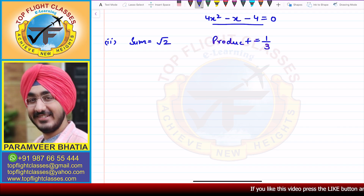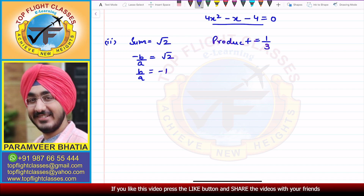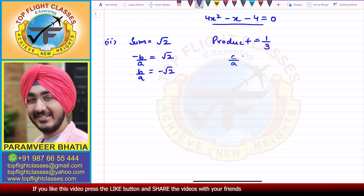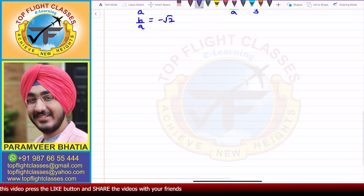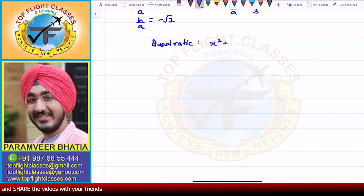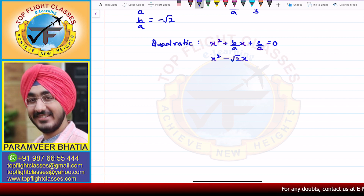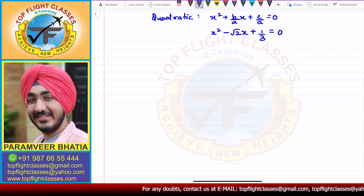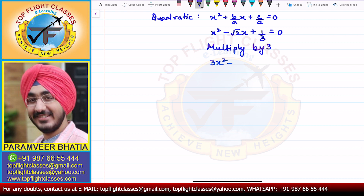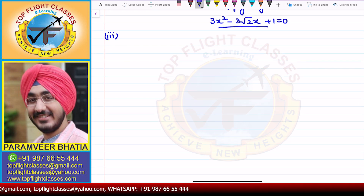For the second part, the sum is √2 and the product is 1/3. Sum = -b/a = √2, so b/a = -√2. Product = c/a = 1/3. Writing the quadratic: x² + (b/a)x + c/a = 0 gives x² - √2·x + 1/3 = 0. Multiplying by 3, we get 3x² - 3√2·x + 1 = 0. This is the required equation.